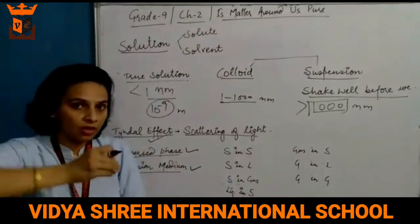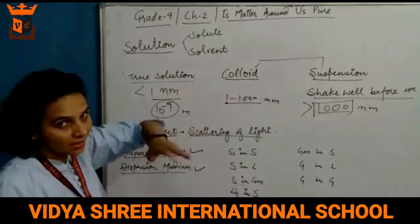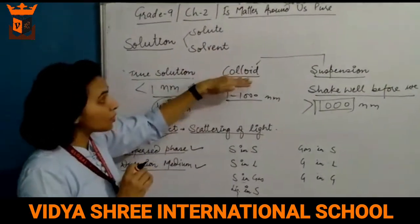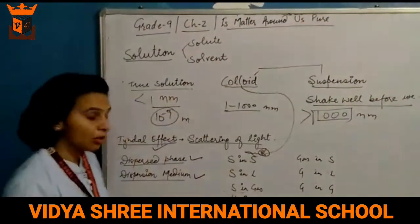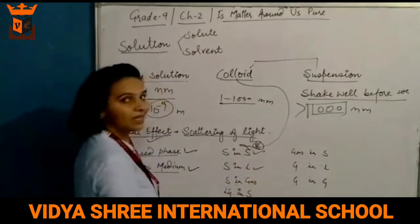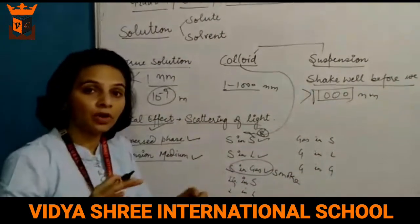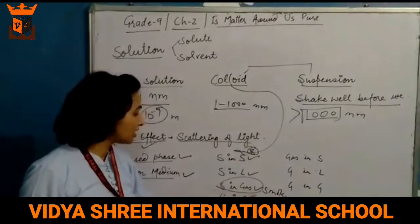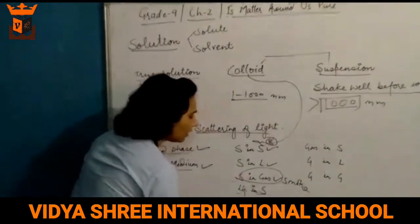Dispersed phase is analogous to solute and dispersion medium is analogous to solvent. For example, if sugar (solid) is dissolved in water (liquid), that is a solid-in-liquid solution. Similarly, colloids can be of eight types based on the type of dispersed phase and dispersion medium: solid in solid, solid in liquid, solid in gas — for example, smoke, which is unburnt carbon particles (solid) in air (gas). Also liquid in solid, liquid in liquid, liquid in gas.